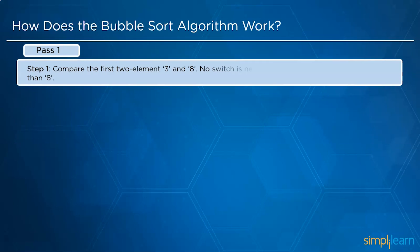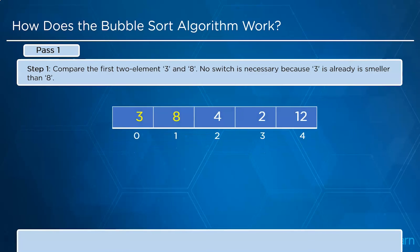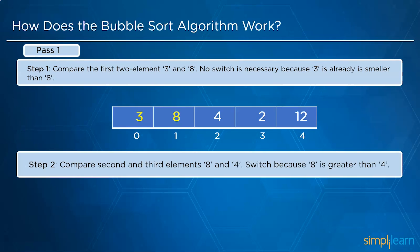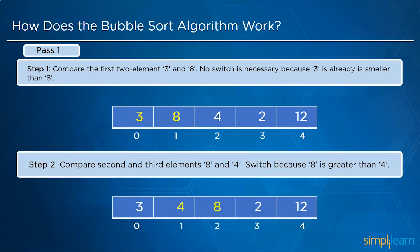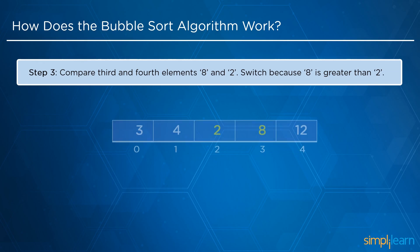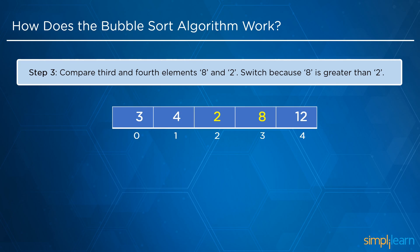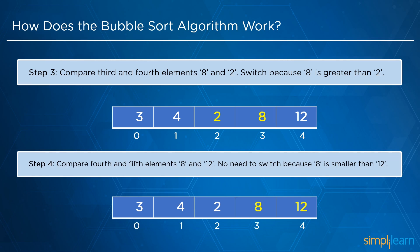In the first pass, there are 4 steps. Step 1: compare 3 and 8 — no swap needed as 3 is already less. Step 2: compare 8 and 4 — swap because 8 is greater than 4. Step 3: compare 8 and 2 — swap because 8 is greater than 2. Step 4: compare 8 and 12 — no swap needed as 8 is already less than 12.